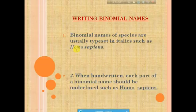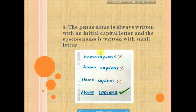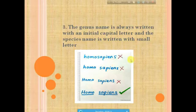Here you can see that the initial letter of the genus name is capital and the species name is in small letters. Here I put an example that is incorrect because there is no gap between the genus and species name and the genus name does not start with a capital letter — that is why it is wrong.